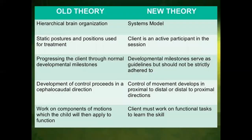Moving on to the old theory and the new theory. The old theory consists of a hierarchical brain organization, static posture and positions used for treatment, progressing the client through normal developmental milestones, development of control proceeding in a cephalocaudal direction, and working on components of motion which the child will then apply to function.